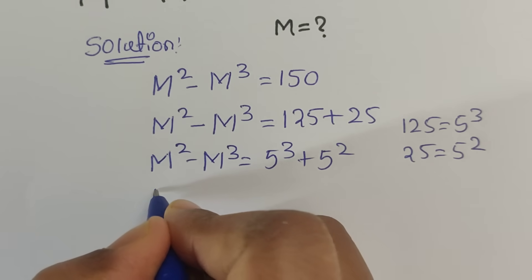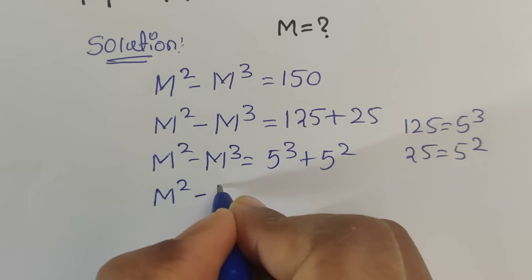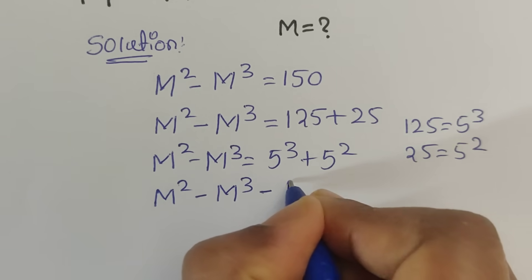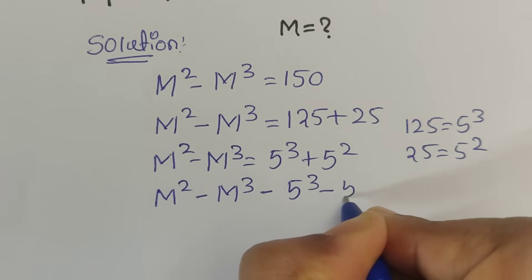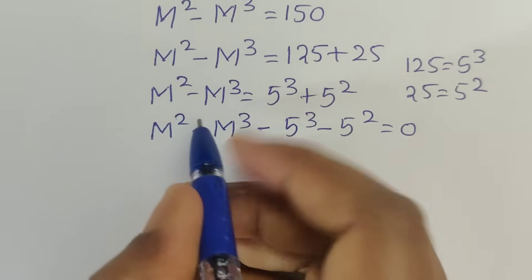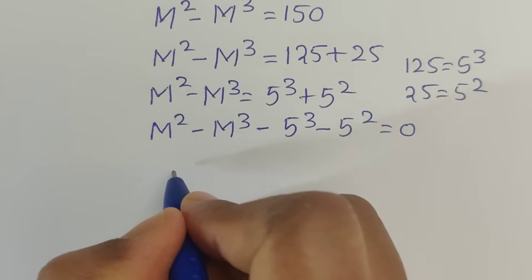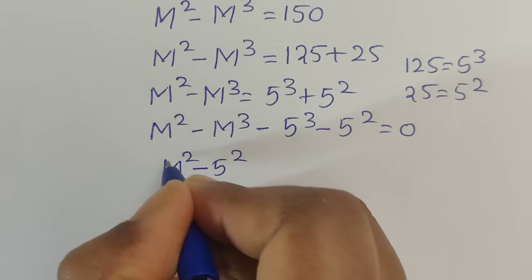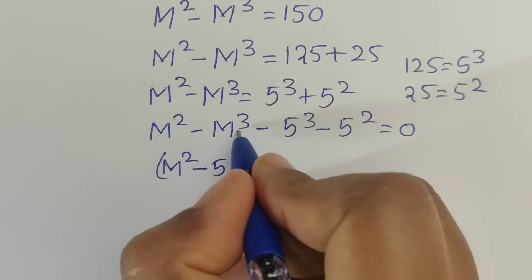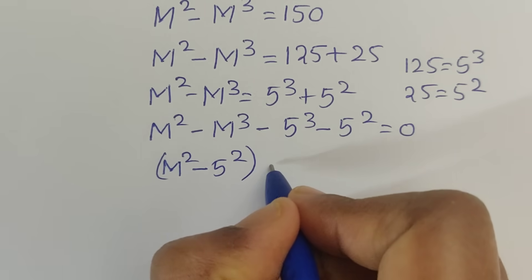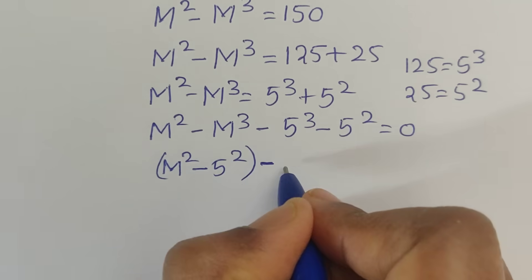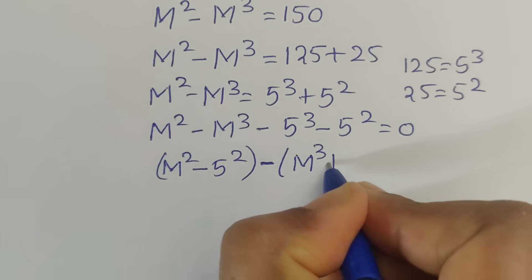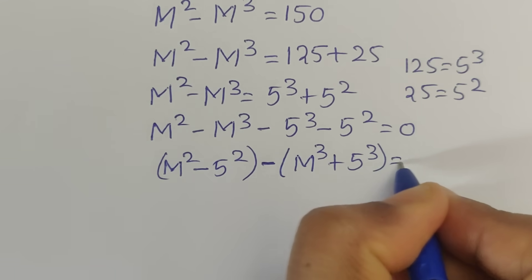So now m squared minus m cubed. Move this term to the left side. Now it will be minus 5 cubed minus 5 squared equals 0. Now write the power 2 terms together. We are taking negative outside, so now it will be m cubed plus 5 cubed equals 0.